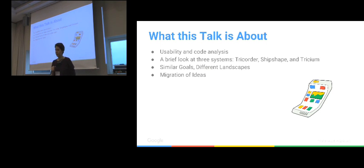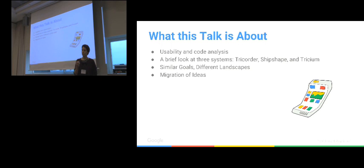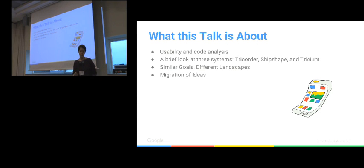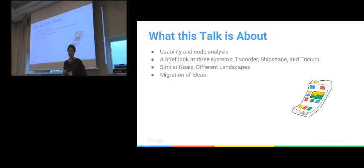This is going to be about usability and code analysis, because that is the goal of the systems I will be talking about. It's a brief look into three systems: Tricoder, ShipShape, and Trisium. These systems have similar goals but work in different landscapes. That's part of the experience — looking at these different landscapes and building a system for them — and how ideas from Tricoder were migrated to ShipShape and then Trisium, the most recent addition.